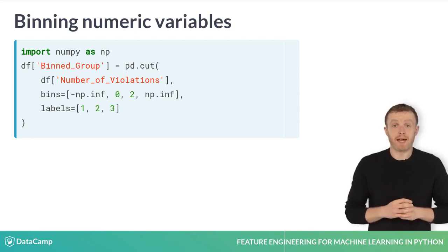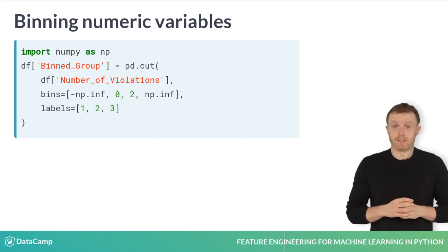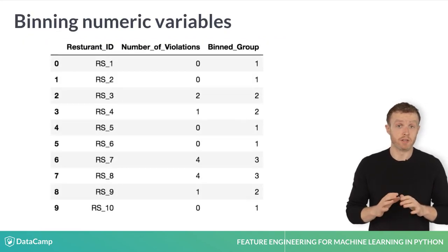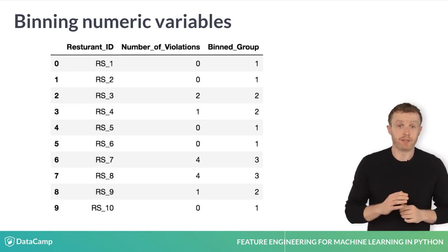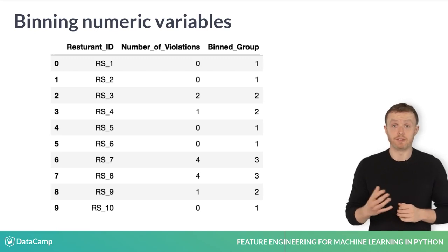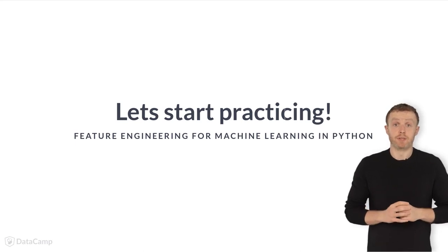Bins are created using the pandas cut function. You can define the intervals using the bins argument, which in this case is a list of four values. You can also pass a list of labels. Note, as we want to include zero in the first bin, we must set the leftmost edge to lower than that. So all values between negative infinity and zero are labeled as one, all values equal to one or two are labeled as two, and all values greater than two are labeled as three. Now you know how to binarize and bin numeric columns — it's time for you to put this into practice.